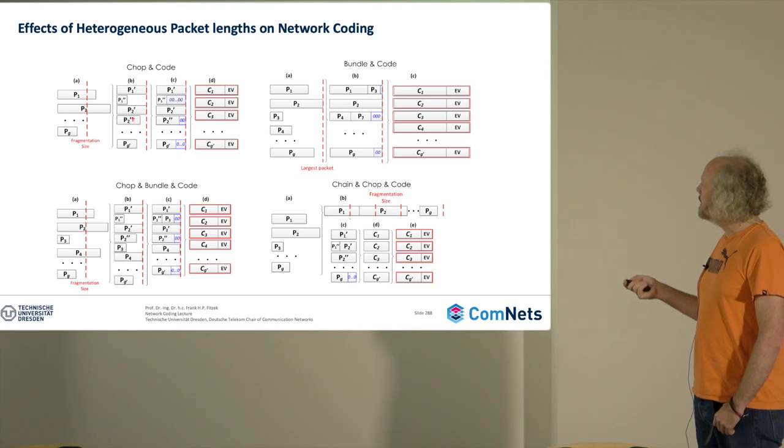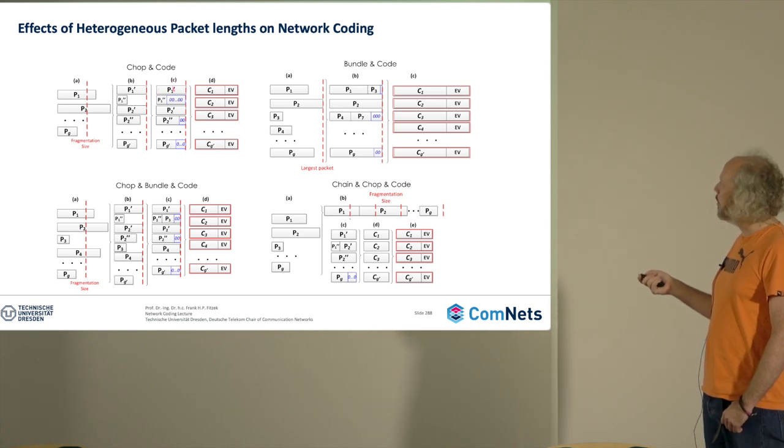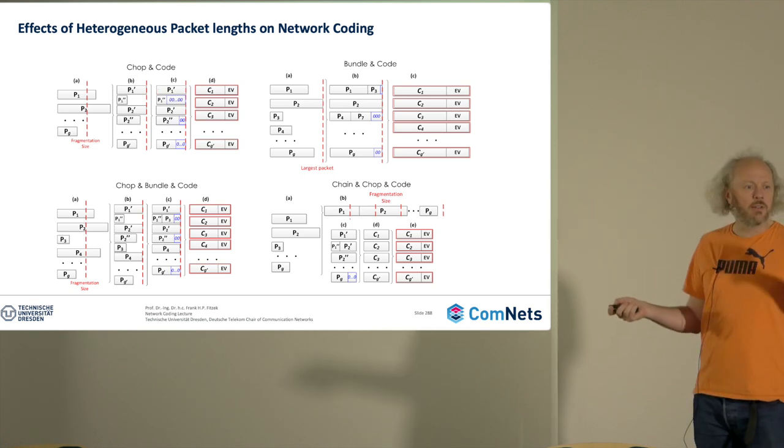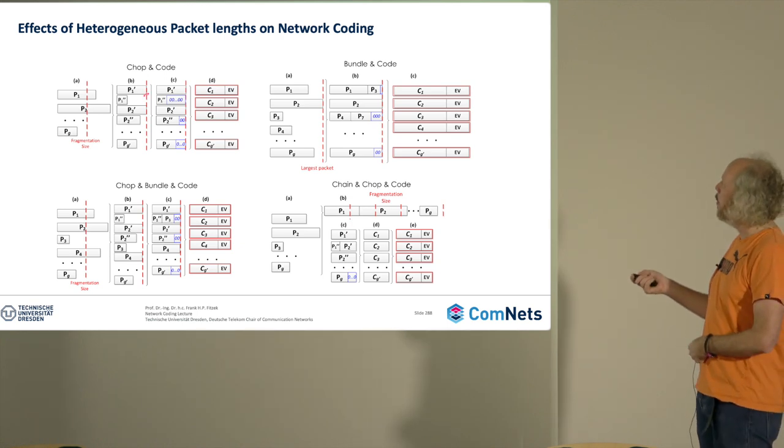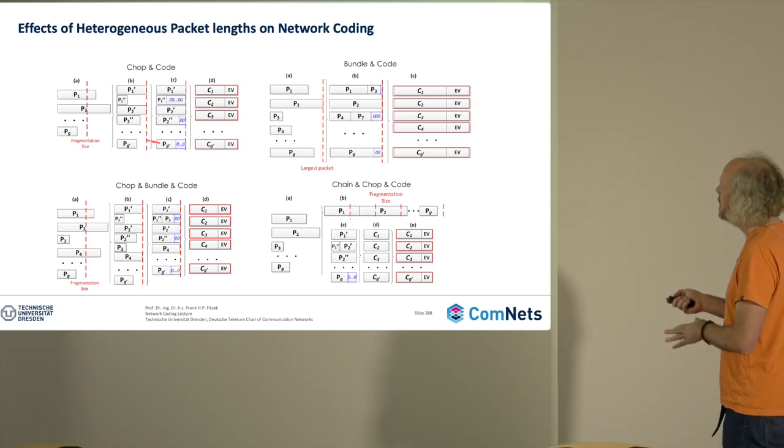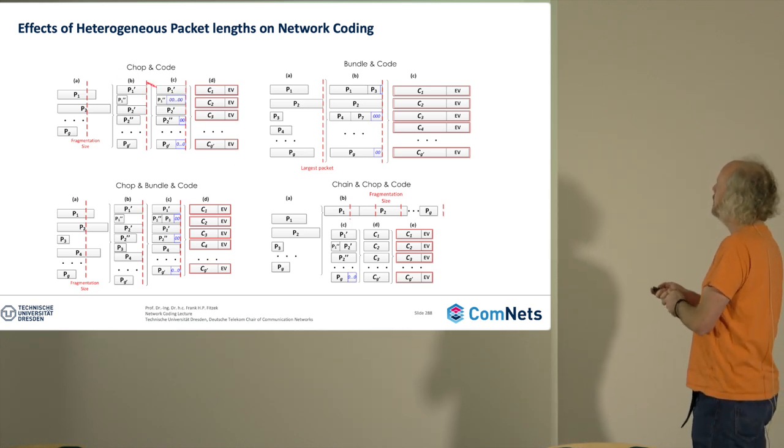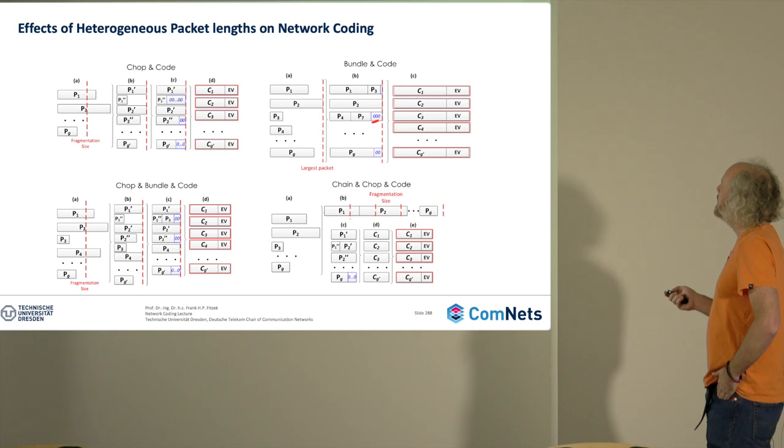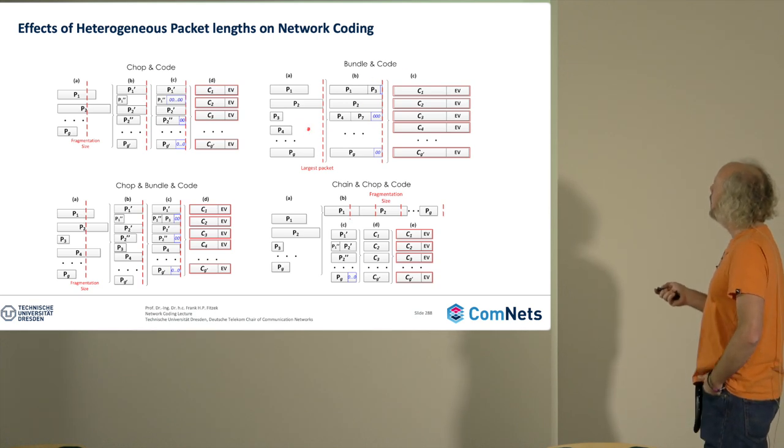What is interesting is whether this chop and coat approach is free, or do I need some information in the packets to say where do they end, where they stop, what is padding, etc. We did not assume it here, but let's assume this to be very simple. The other one is bundle and coat, where you just say I will try to fill in the holes with something like p3 that fits exactly into the padding zone of p1.